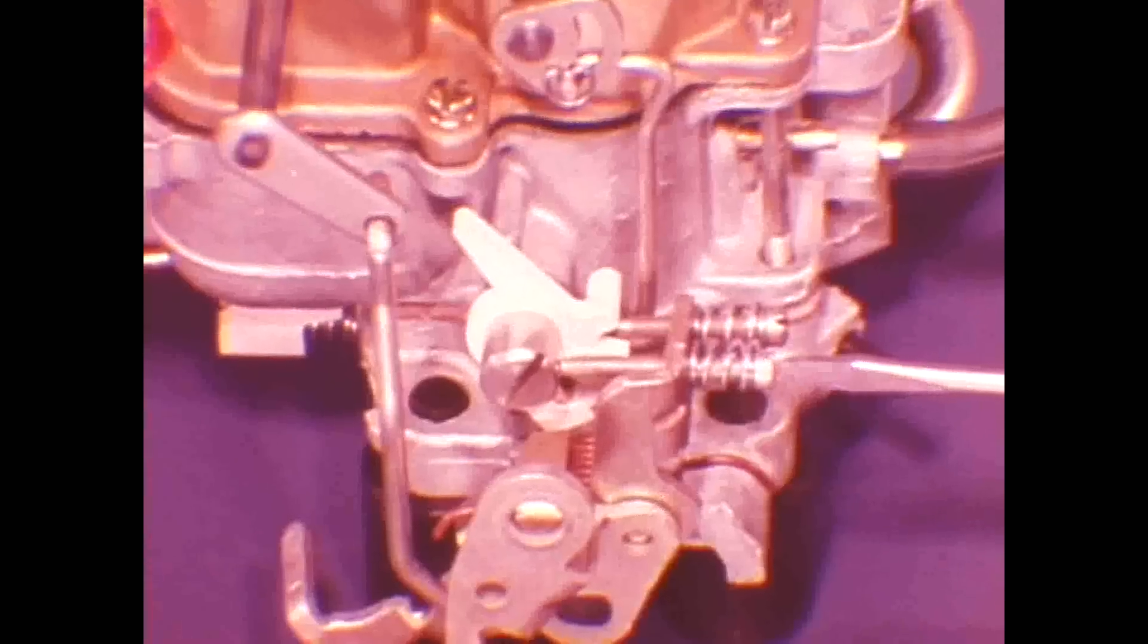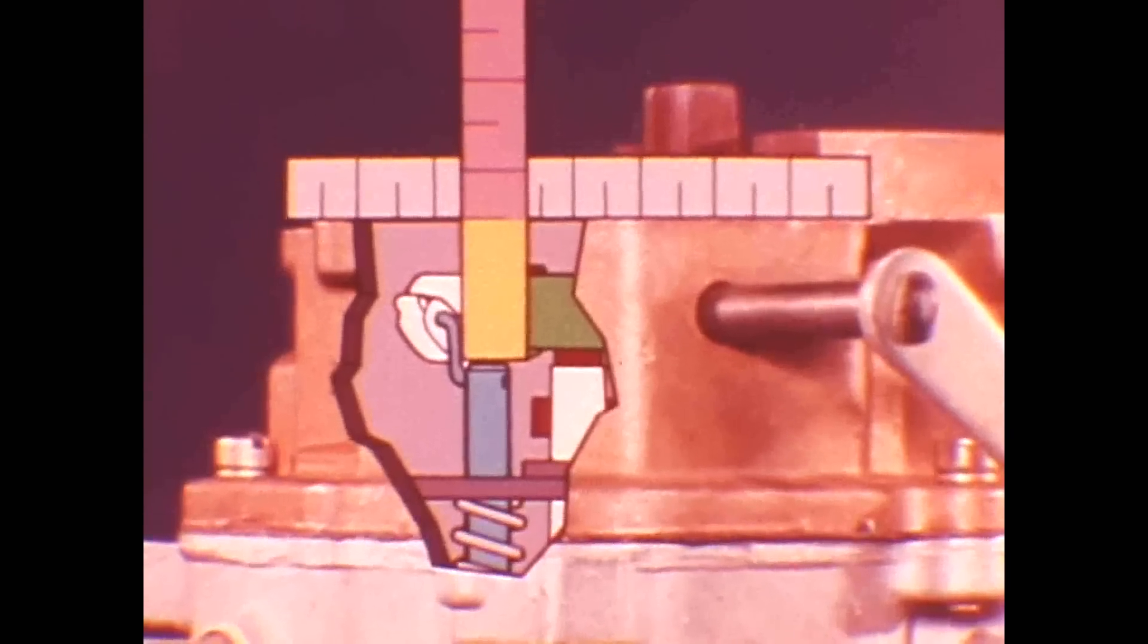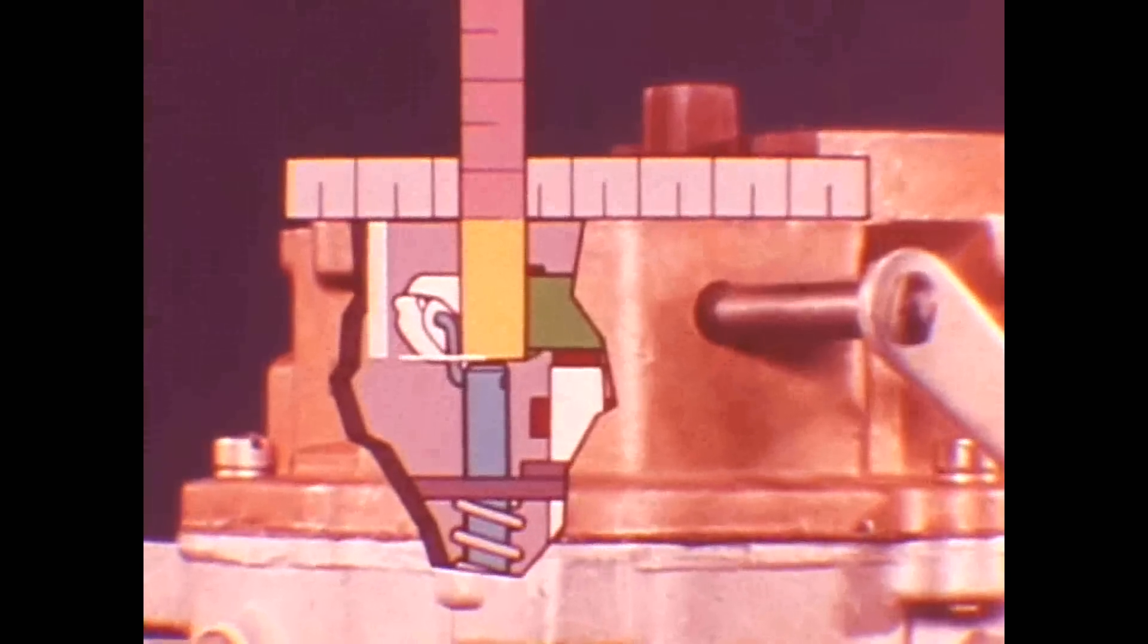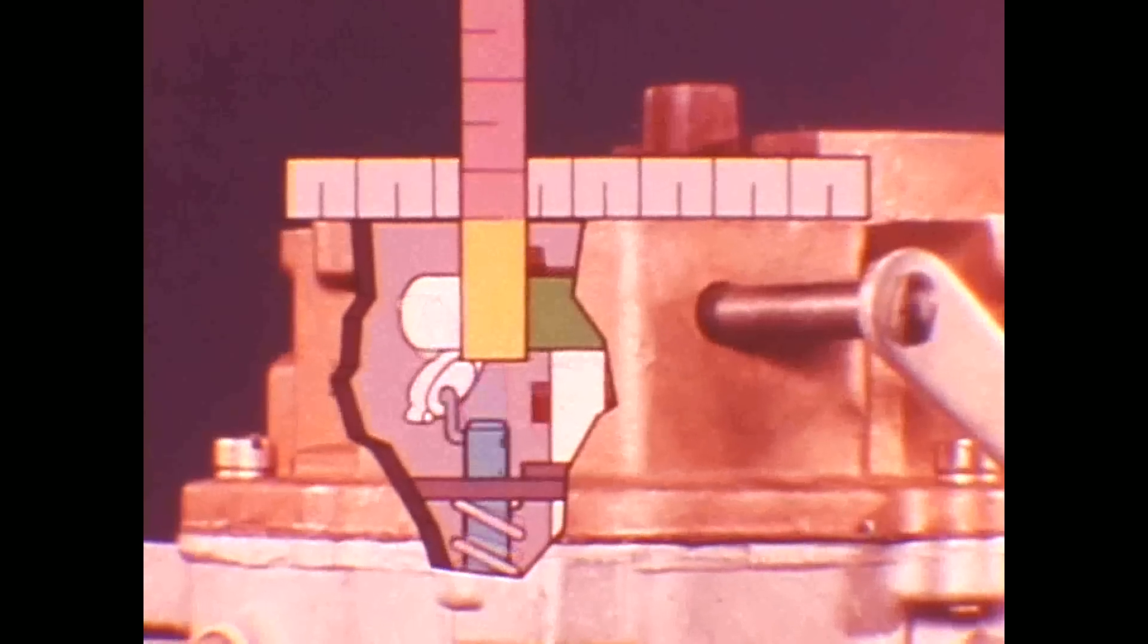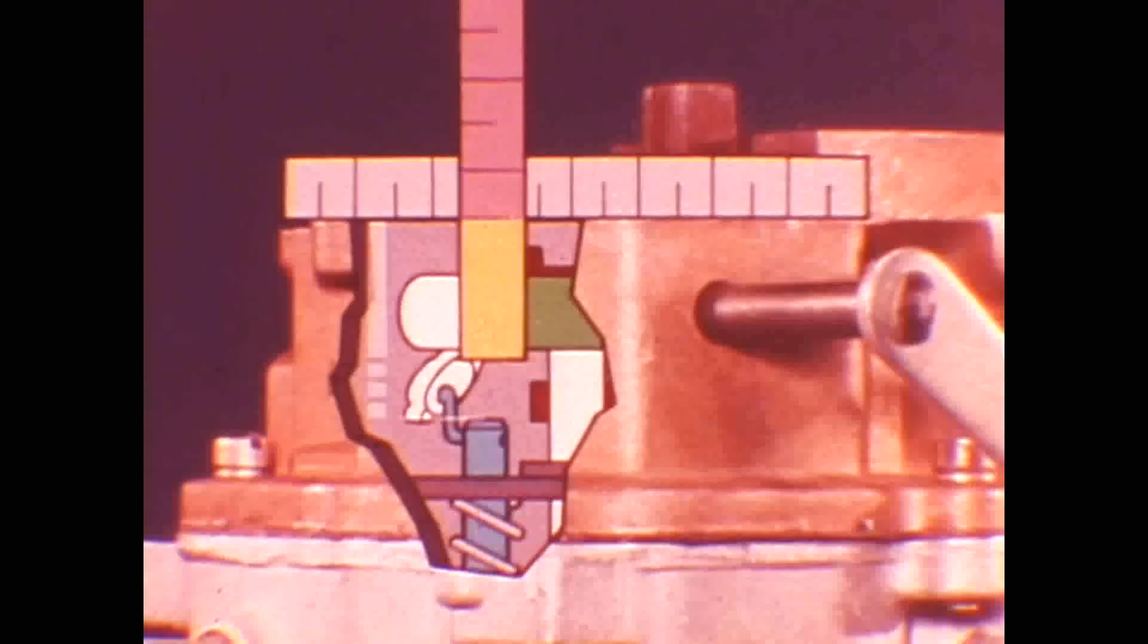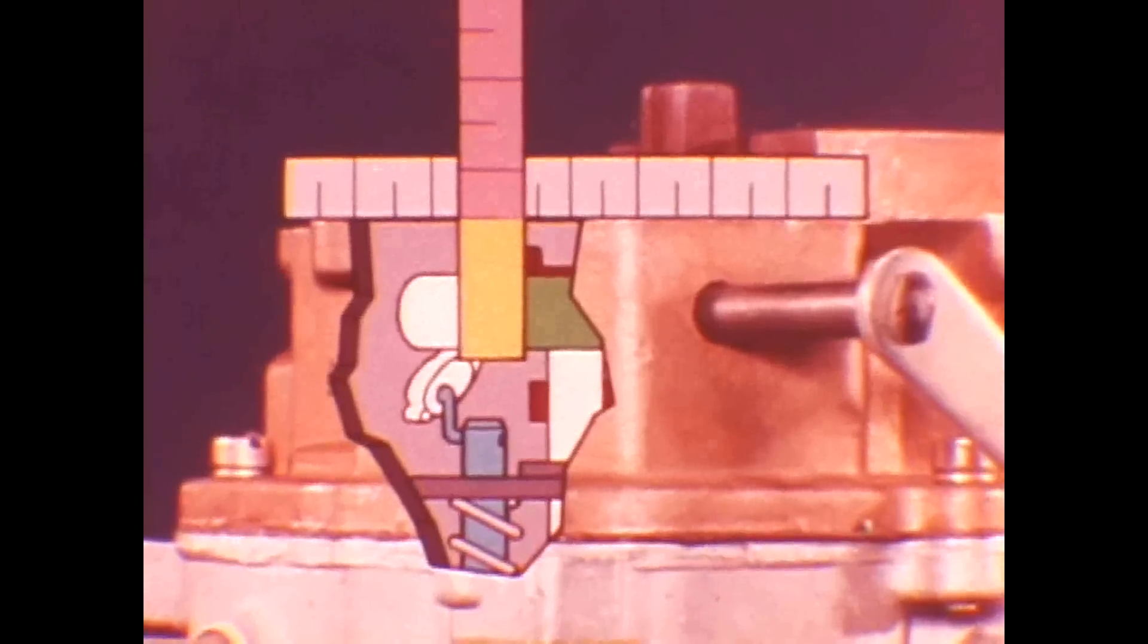Now for accelerator pump stroke measurement. Turn the idle speed screw inward until it just touches the idle stop. Give it two additional clockwise turns. Measure the distance between the pump shaft and the top surface of the air horn. It must be at the spec called for in the service manual. A pump shaft set down too far reduces pump stroke travel. As a result, too little fuel is discharged on acceleration, causing flat spots and hesitation. No Sam, hesitation is not a new dance step.